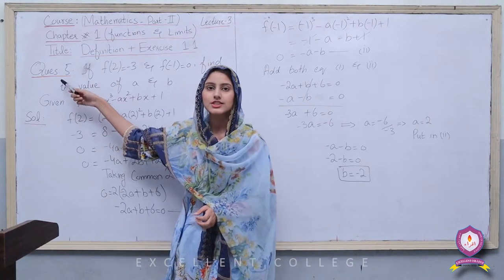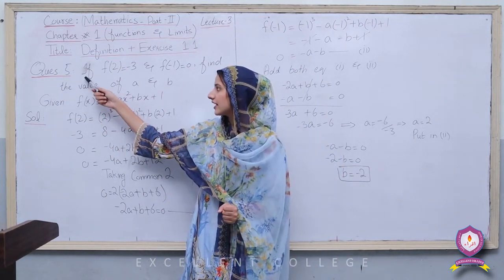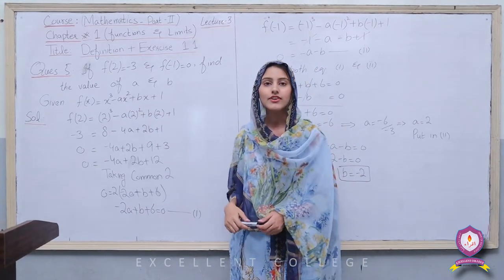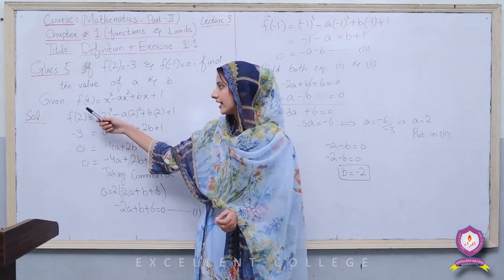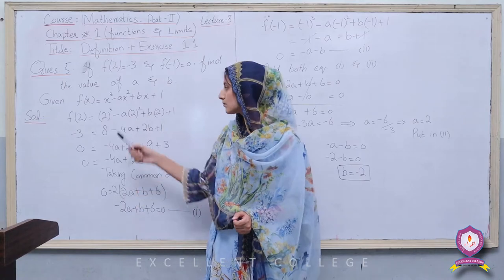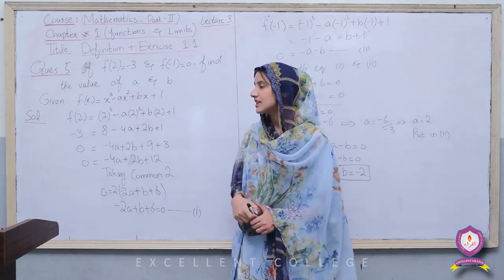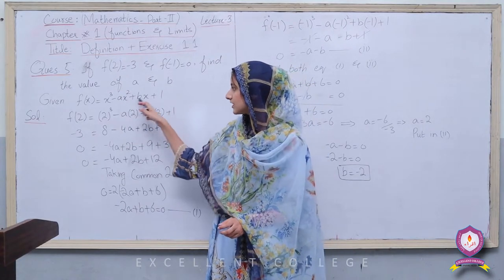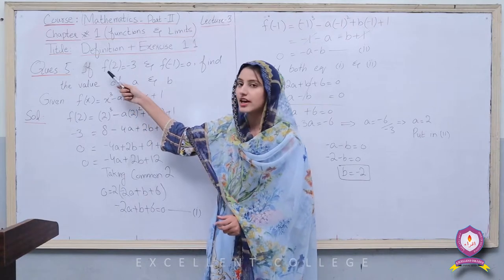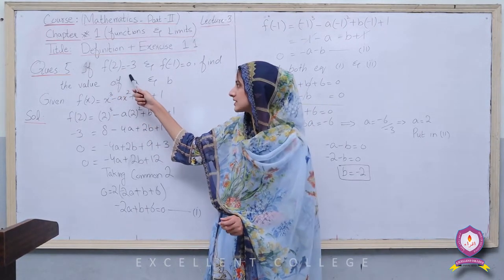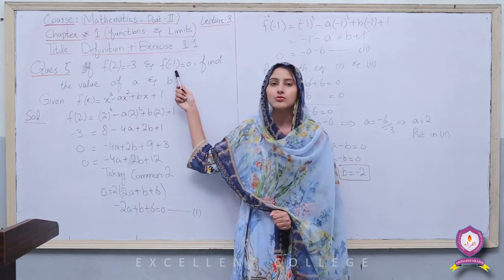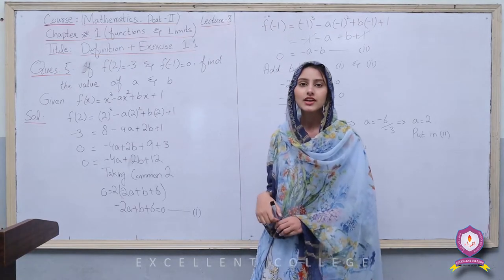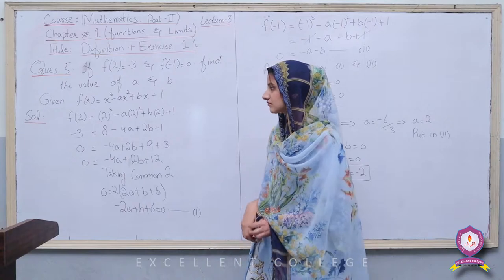Now we'll do Exercise Question 5. The statement is: if f(2) = -3 and f(-1) = 0, find the values of a and b, given that f(x) = x³ - ax² + bx + 1. We've been given a function and some values of x. When x = 2, the result is -3; when x = -1, the result is 0. We need to find the values of a and b using this function.